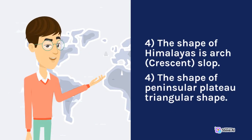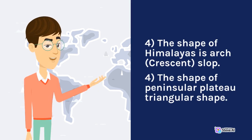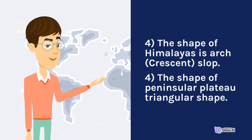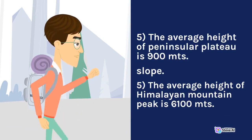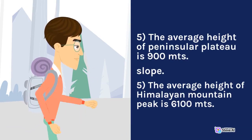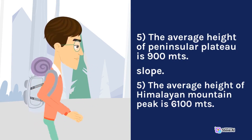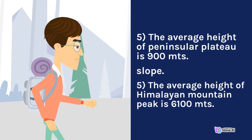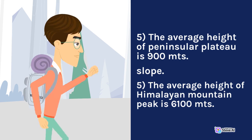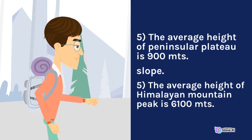Four: The shape of the Himalayas is arch or crescent-shaped; the shape of the Peninsular Plateau is triangular. Five: The average height of the Peninsular Plateau is 900 meters. Five: The average height of Himalayan mountain peaks is 6,000 meters.